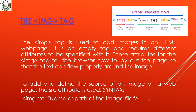The img tag — img stands for image. The image tag is used to add images in an HTML web page. It is an empty tag, meaning you do not need to close it, and it requires different attributes which help the image look organized on the web page. These attributes tell the browser how to lay out the page so that text can flow properly around the image.